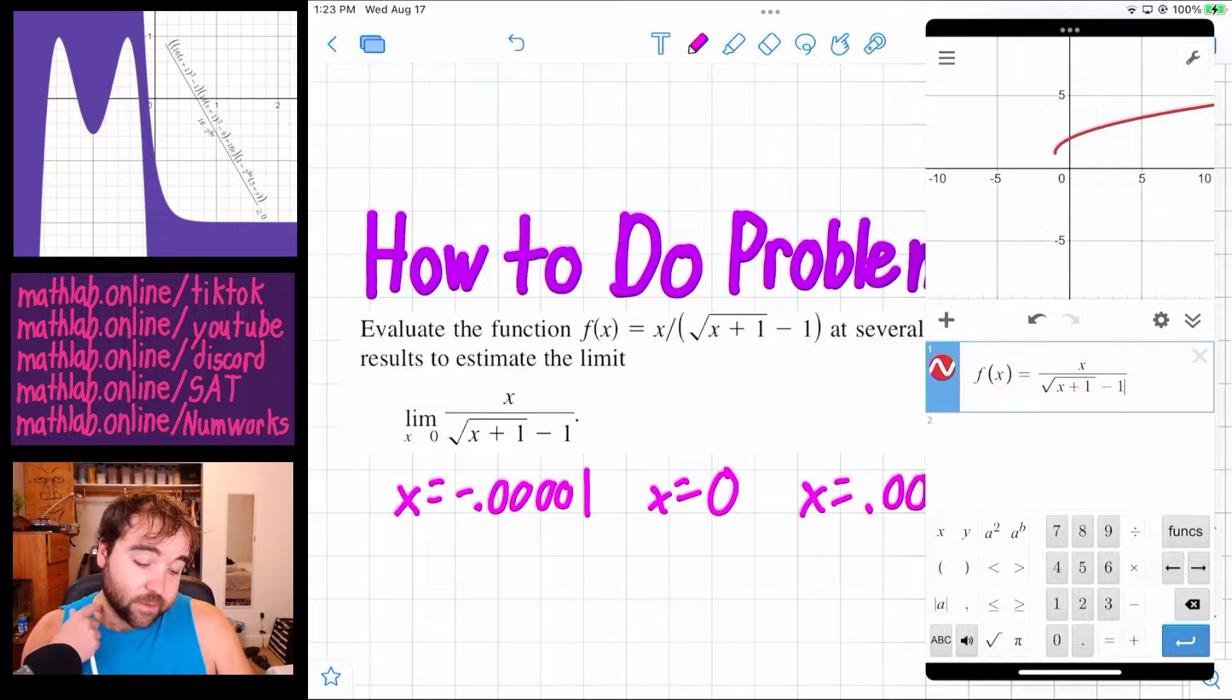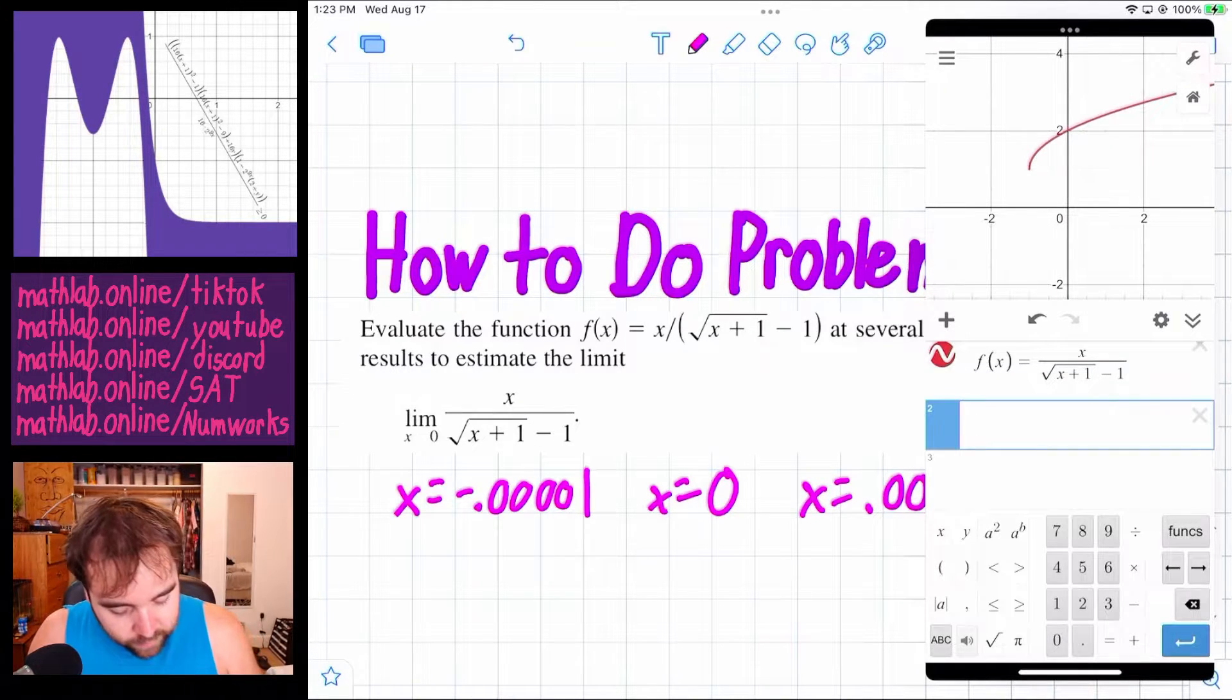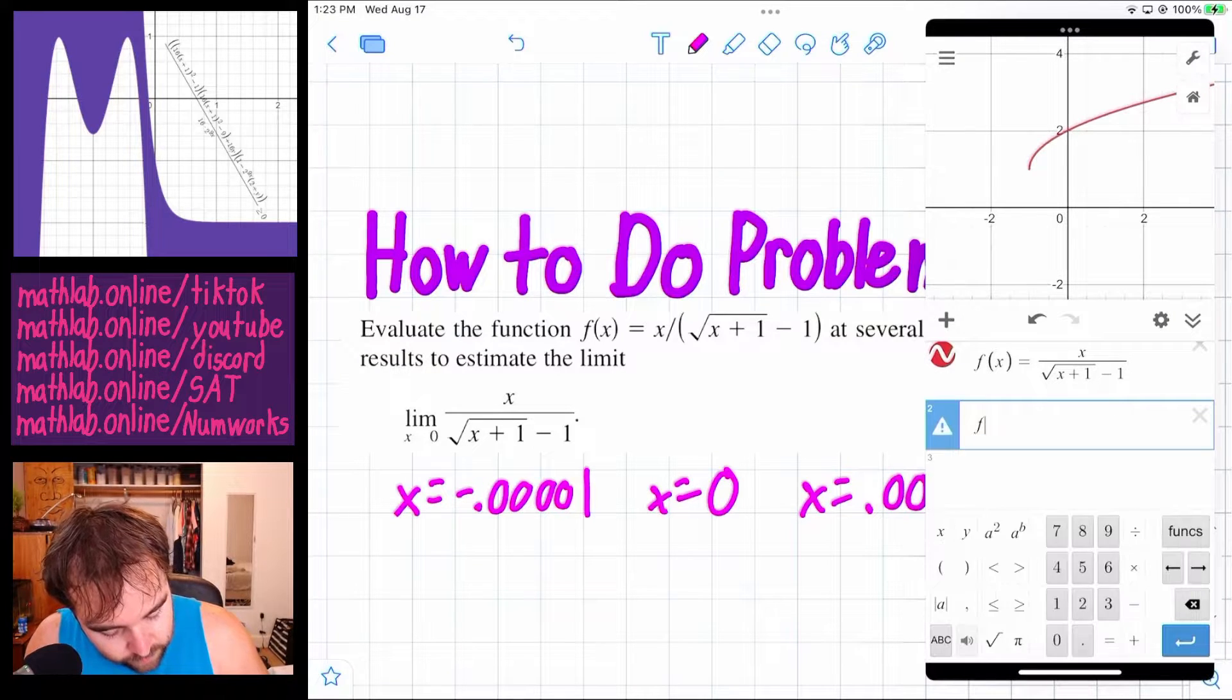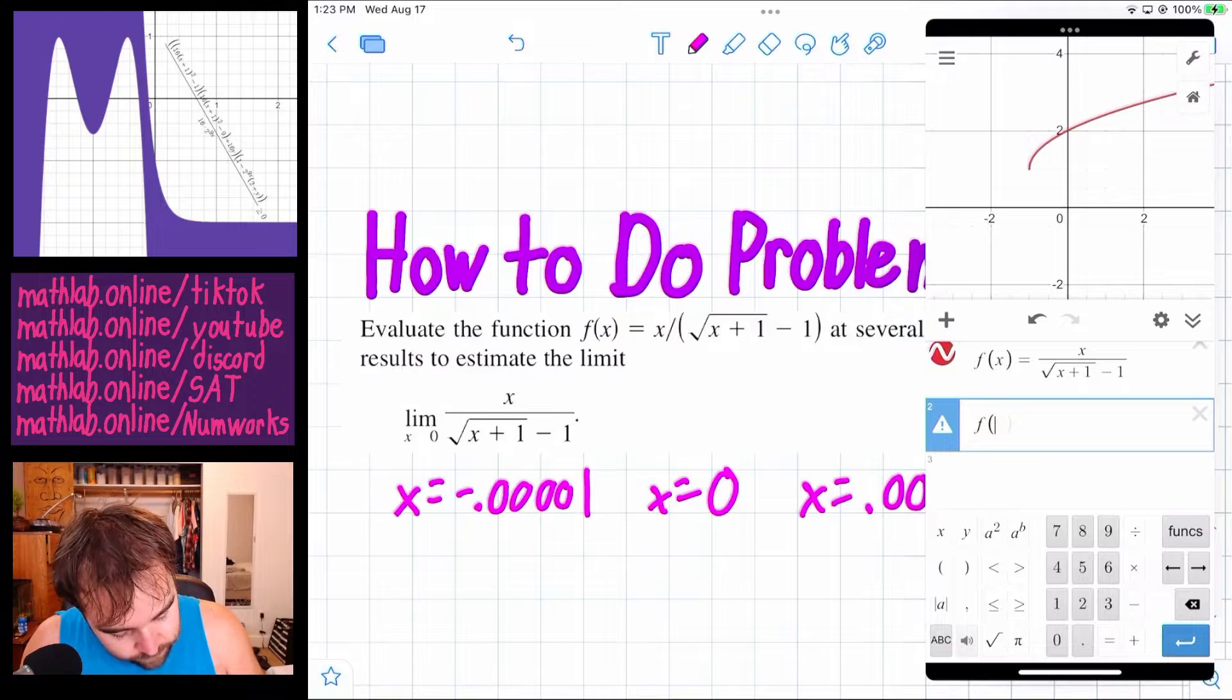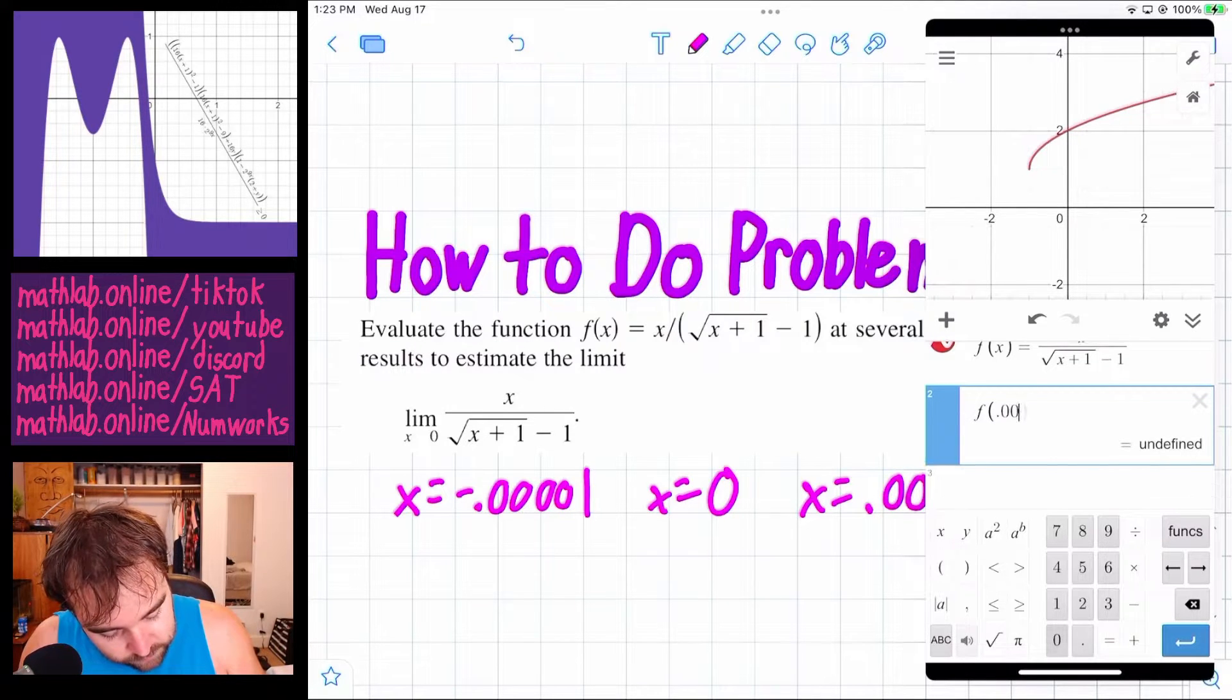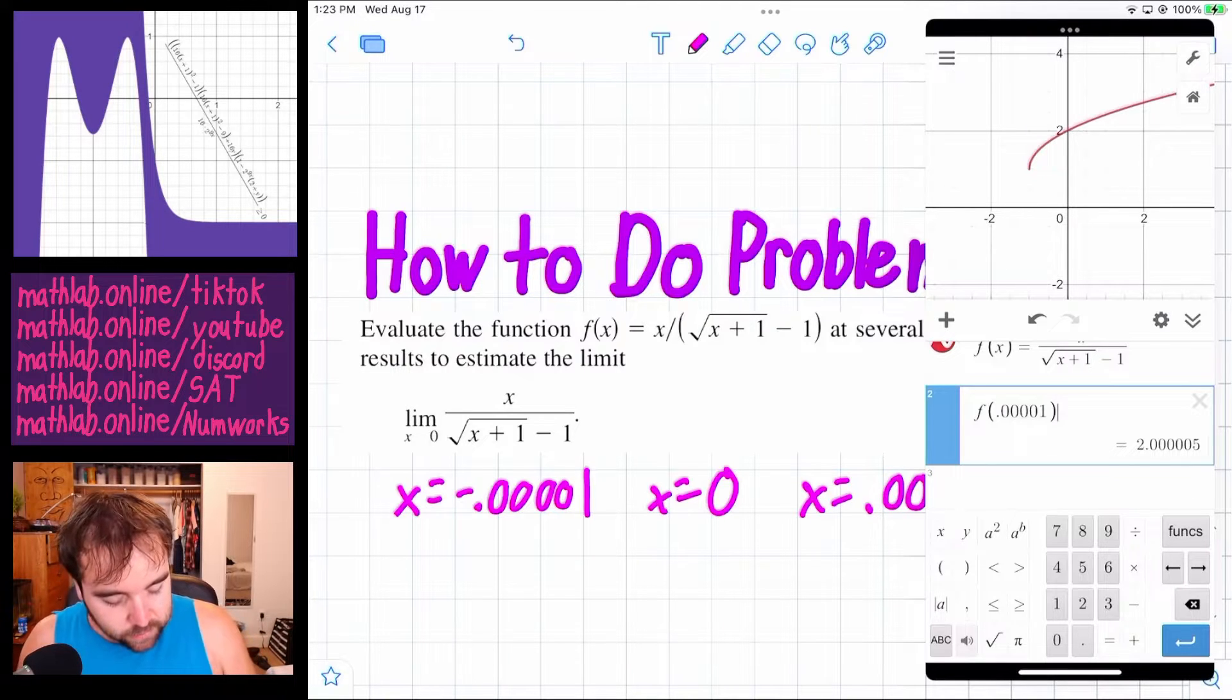So honestly, we can see our answer right there. But we don't need to look at that right now. We need to stay focused because all we want to do is plug in f of 0.00001, and you see we get roughly 2.